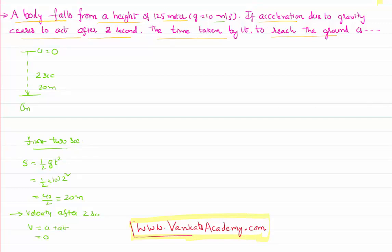Velocity after two seconds can be easily measured using the formula v equal to u plus a t. u is 0, a is nothing but g which is 10, t is 2, so velocity equals 20 meters per second. So in two seconds, the body covered a distance of 20 meters and acquired a velocity of 20 meters per second.